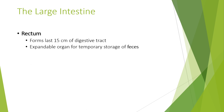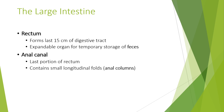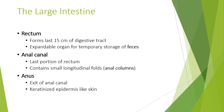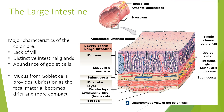Other parts include the rectum, which forms 15 centimetres of the digestive tract and is an expandable chamber for temporary storage of faeces. The anal canal is the last portion of the rectum and contains small longitudinal folds known as anal columns. The anus is the exit of the anal canal. Major characteristics of the colon include the lack of villi, the presence of intestinal glands, and an abundance of goblet cells. Mucus from the goblet cells provides lubrication as the faecal material becomes dry and more compact.